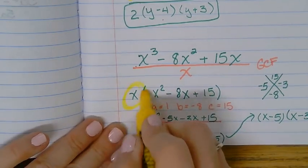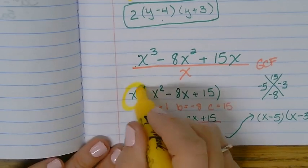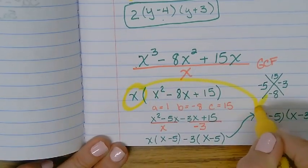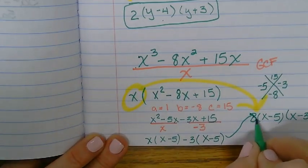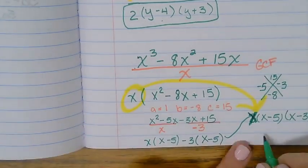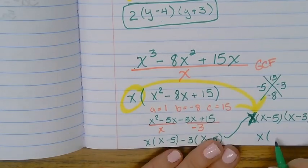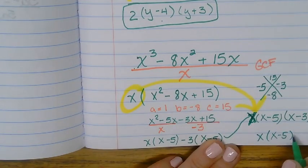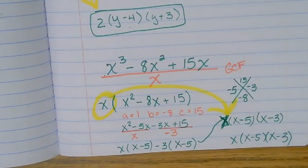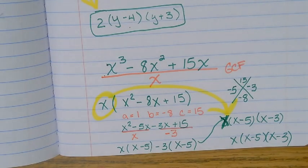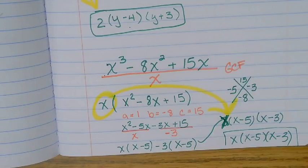Don't forget, what do I have to do with that? Put it in front. Oops, no, there's 3 in x. So our solution is x times x minus 5 times x minus 3. Any questions there?